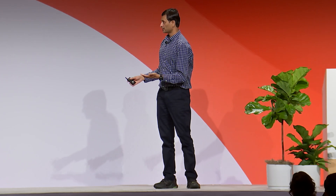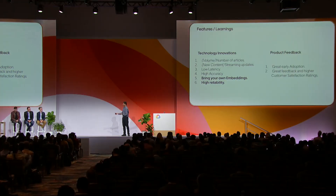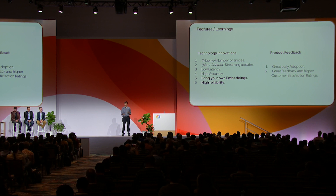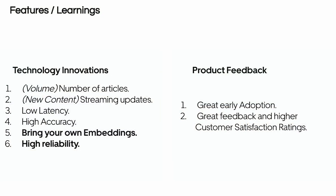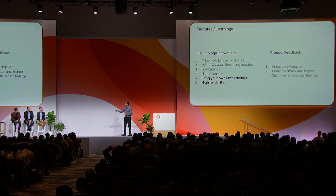To close — the collaboration with Google on Vector Search has been great. It can handle large volumes, you have streaming updates, very good latency and high accuracy. Product tells us there's great early adoption on help.uber.com, we have great feedback, and customer satisfaction — CSAT — is also going up. Great collaboration, and we hope to continue this in the future. Thank you.